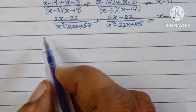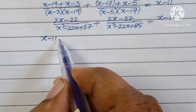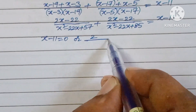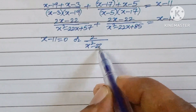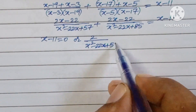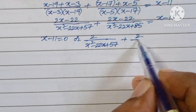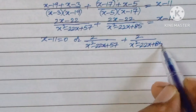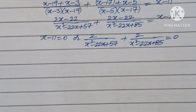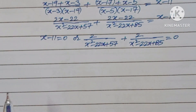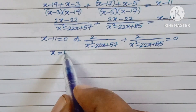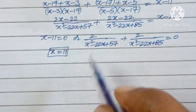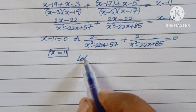We can factor out (x minus 11) from the numerators (since 2x minus 22 = 2(x minus 11)), giving x minus 11 equals 0, so x equals 11 is another solution. Dividing through by (x minus 11) yields 2 over (x squared minus 22x plus 57) plus 2 over (x squared minus 22x plus 85) equals 1. So far we have x equals 0 and x equals 11.